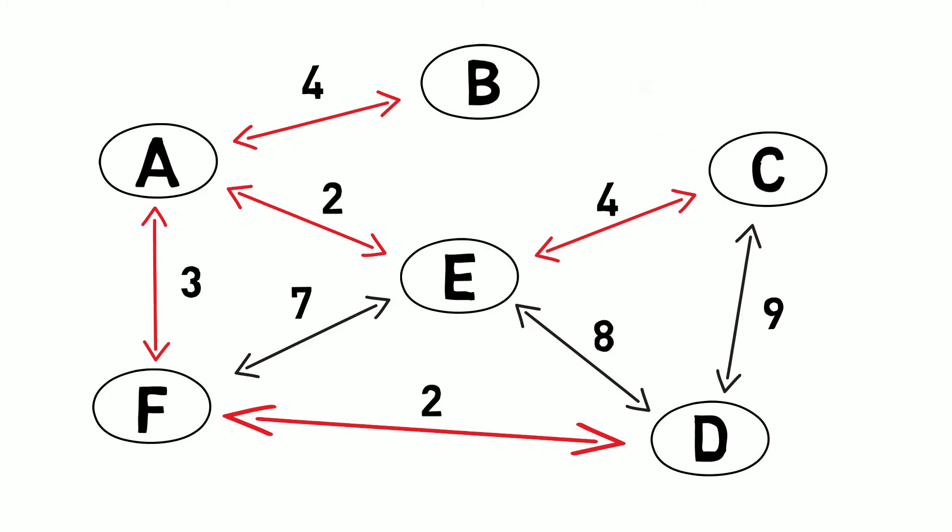If we look at 7 between F and E, it would cause a cycle between A, E, and F. Since 7 is the highest weight, we do not need to include it.